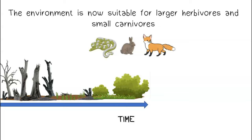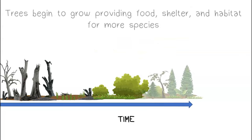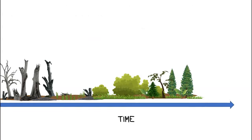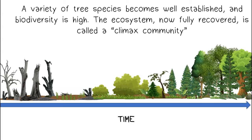The environment is now suitable for larger herbivores and small carnivores. Trees begin to grow, providing food, shelter, and habitat for more species. A variety of tree species becomes well established and biodiversity is high.